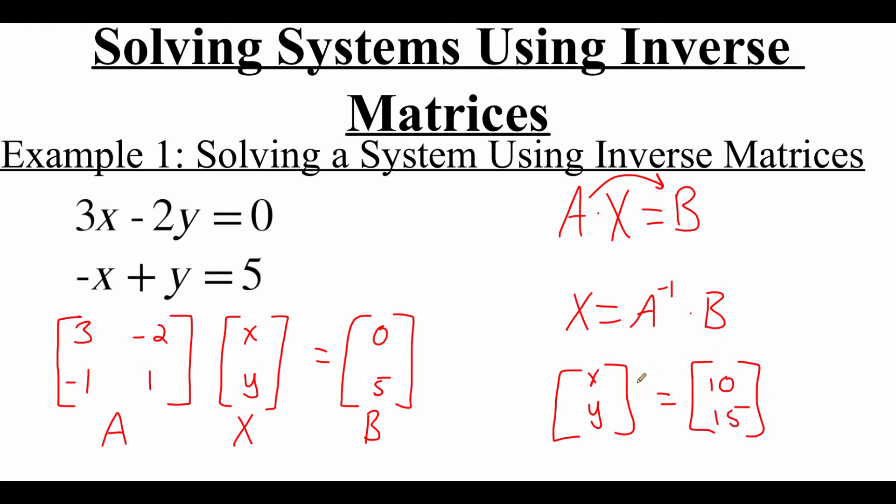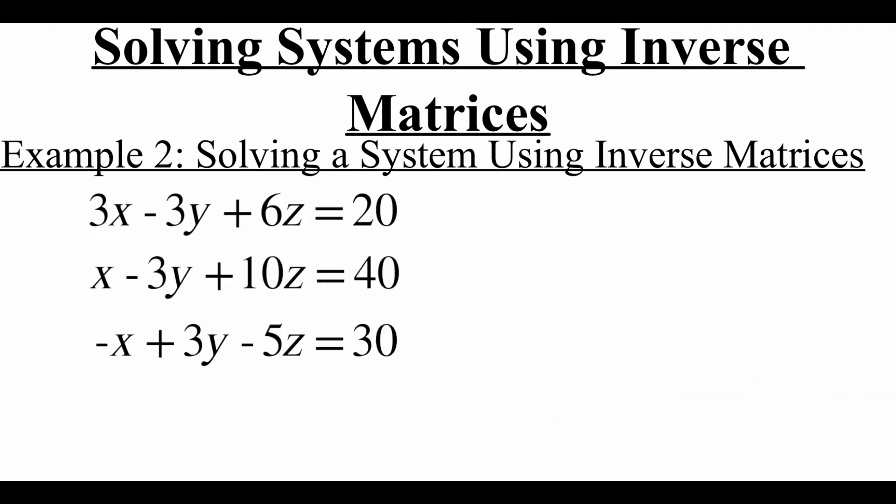When we multiply those together it gives us a two by one matrix. The top value is your x value and the bottom is your y value. So our x value is 10 and our y value is 15. This method is a really good alternative to creating an augmented matrix and putting it in reduced row echelon form, because there are so many steps involved and it's easy to make a sign error or small addition error. This way is a little bit more straightforward.